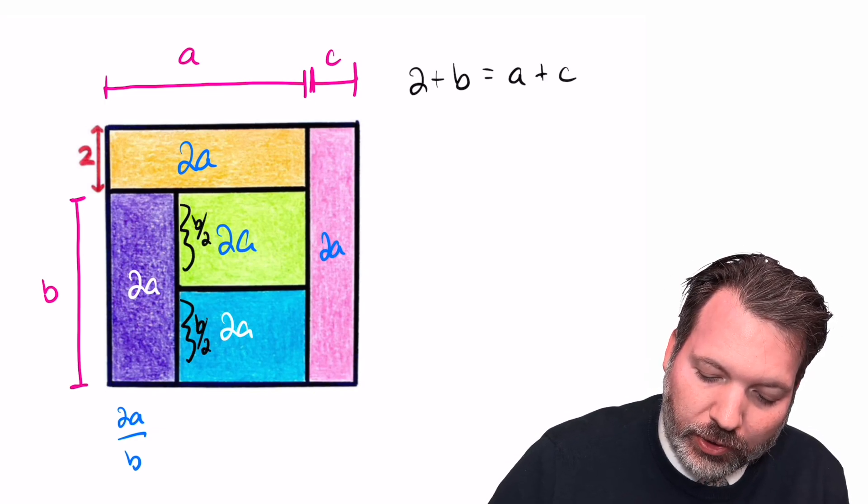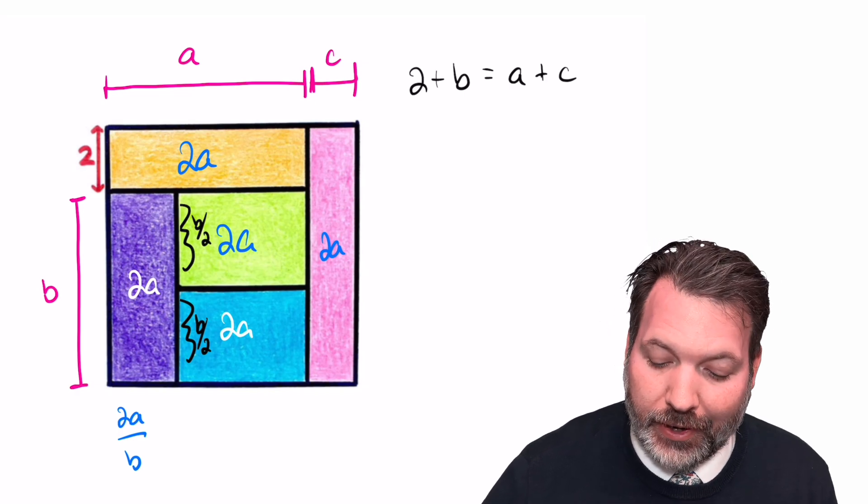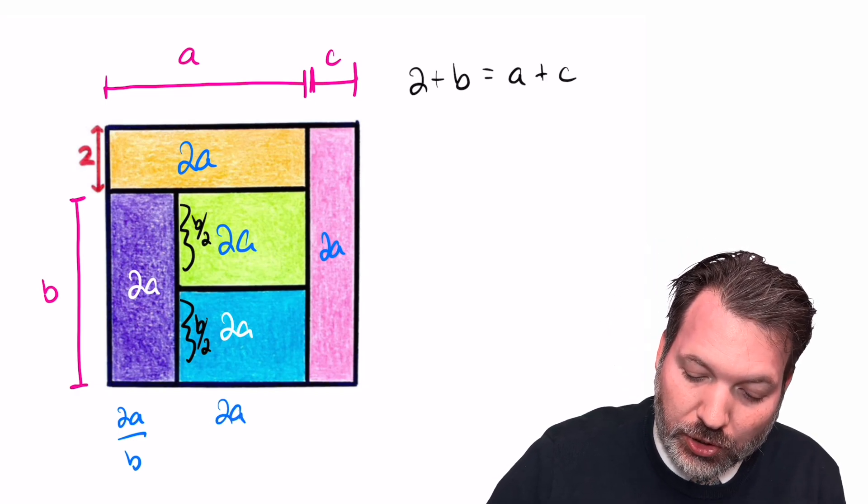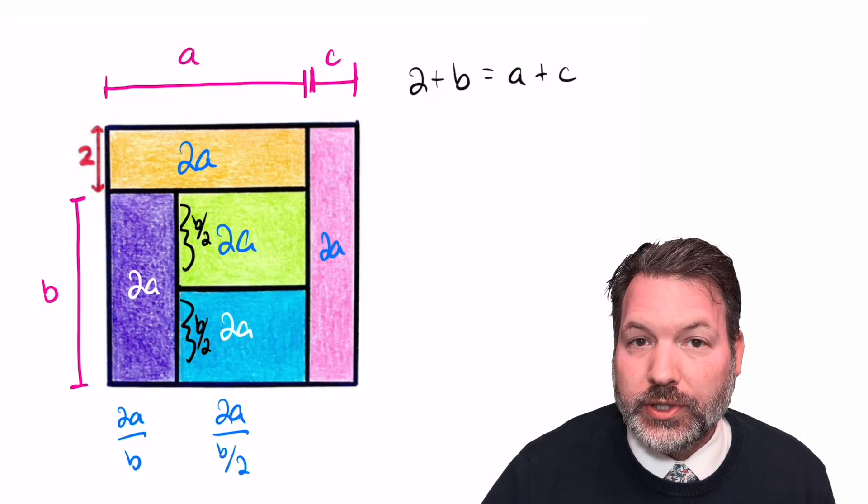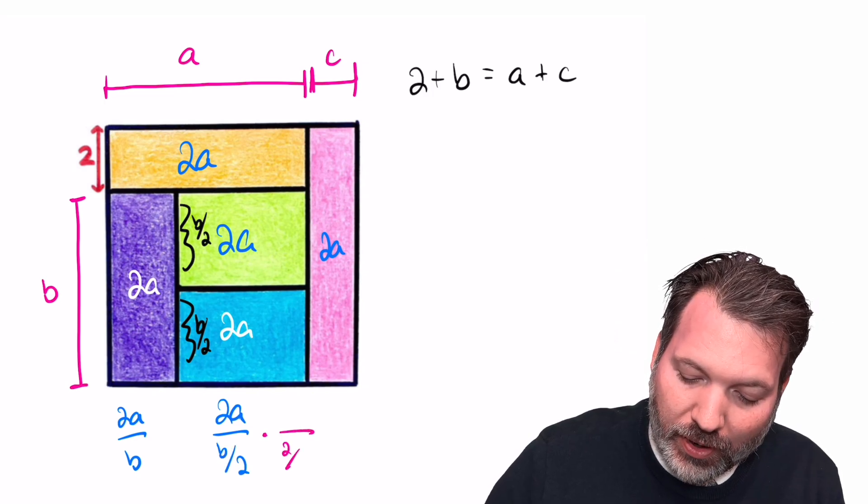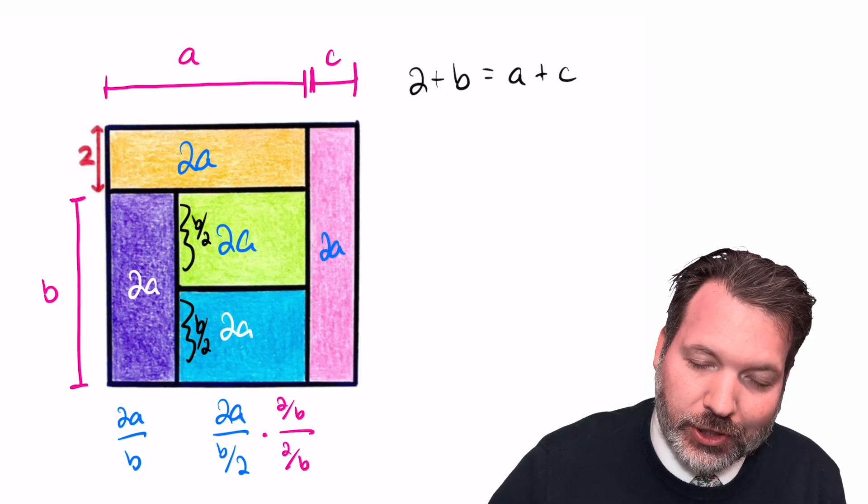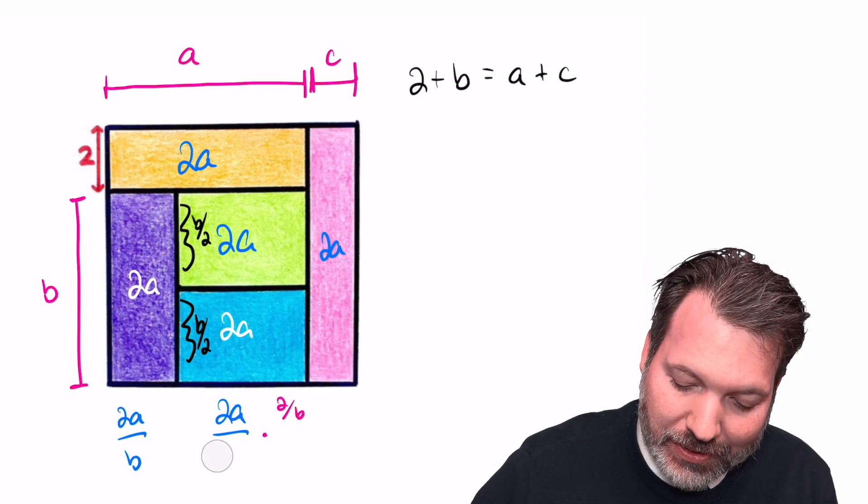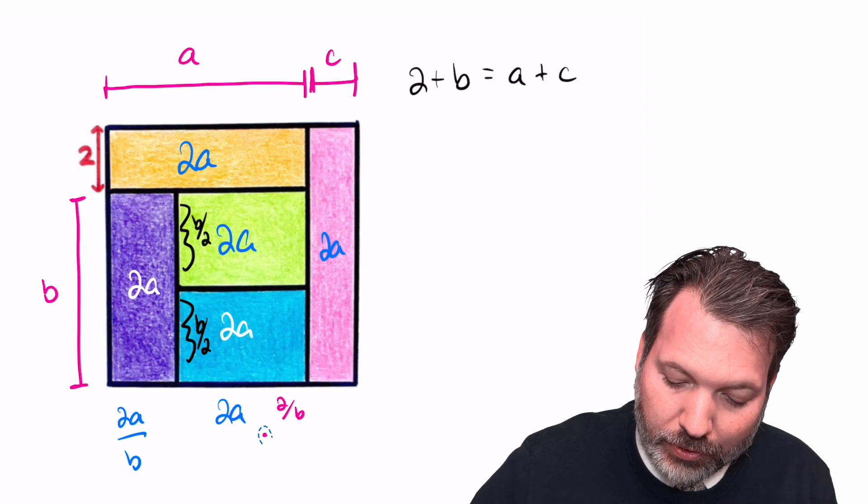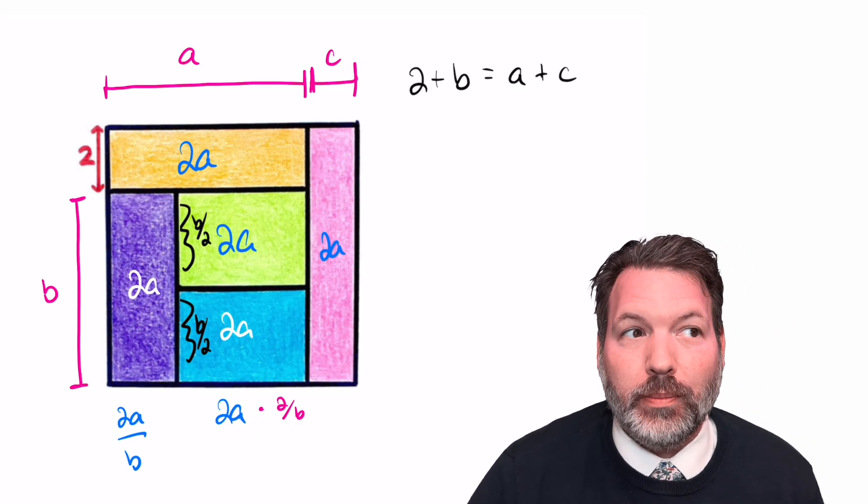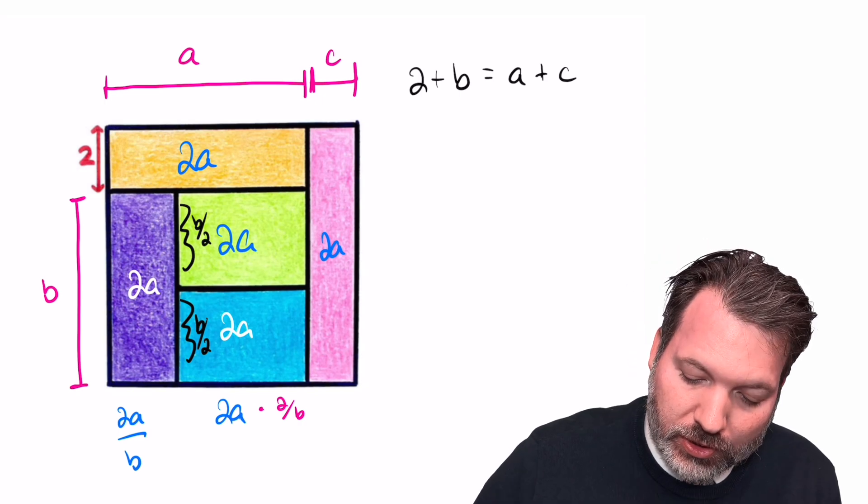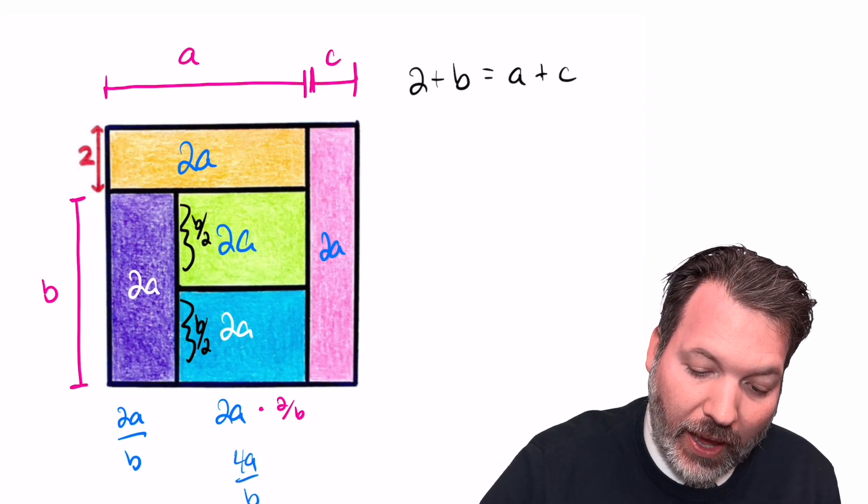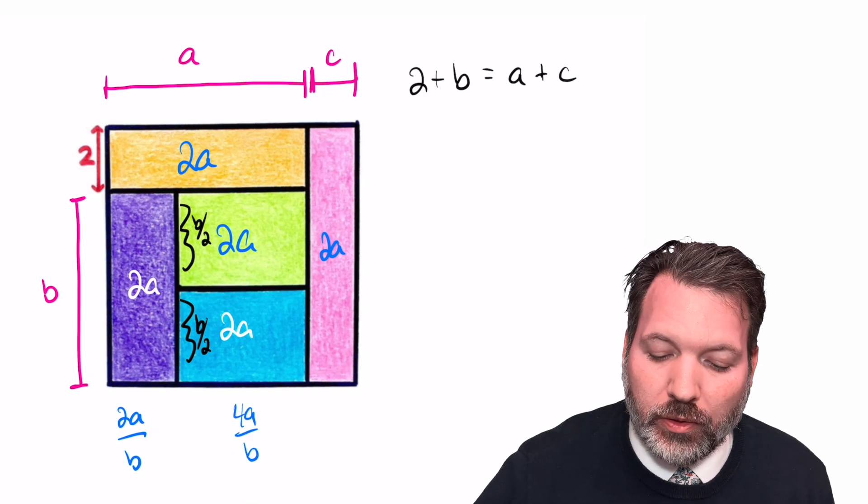Once again, using our relationship width equals area divided by length, we can take a total area of 2a and divide by that length of b over 2. And you probably remember that when we are dividing by fractions, functionally, that's the same thing as multiplying by their reciprocals. And so in fact, that width must be the product of 2a and 2 over b, which is going to give us back 4a over b.